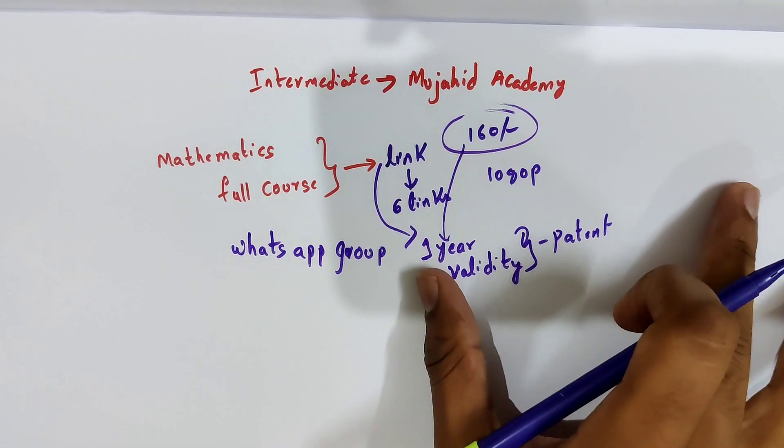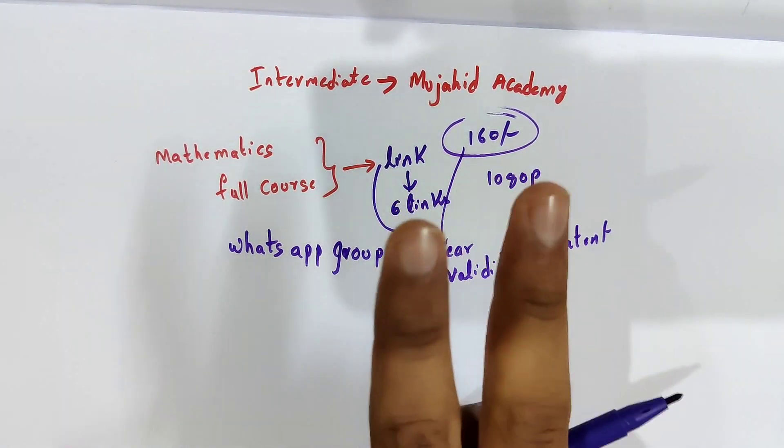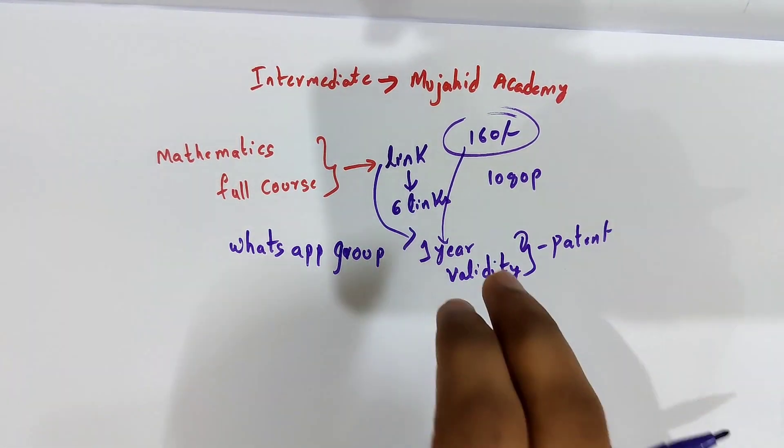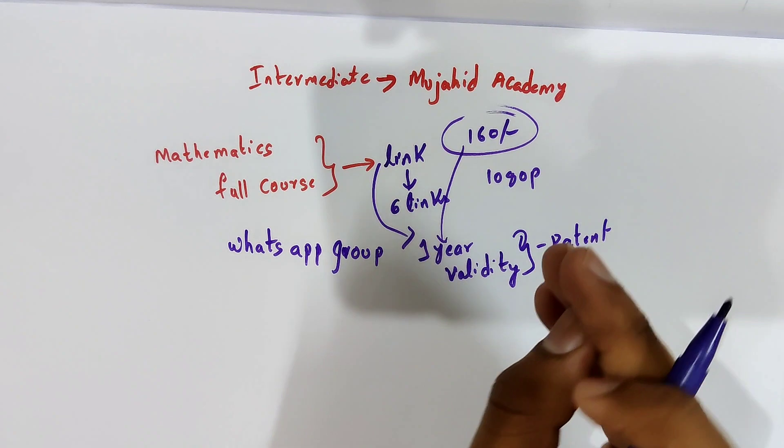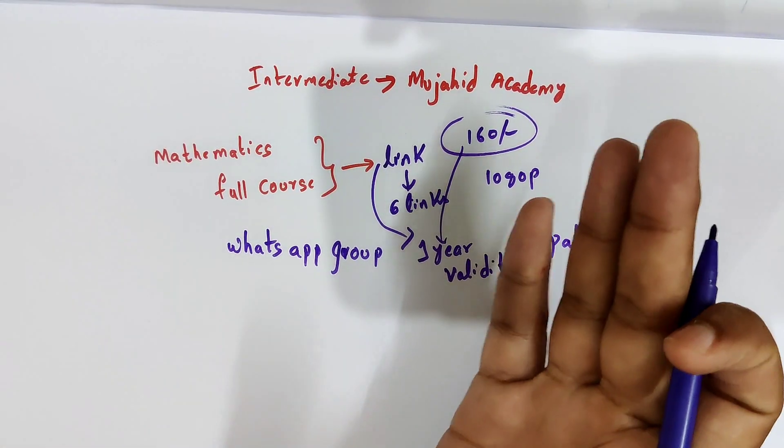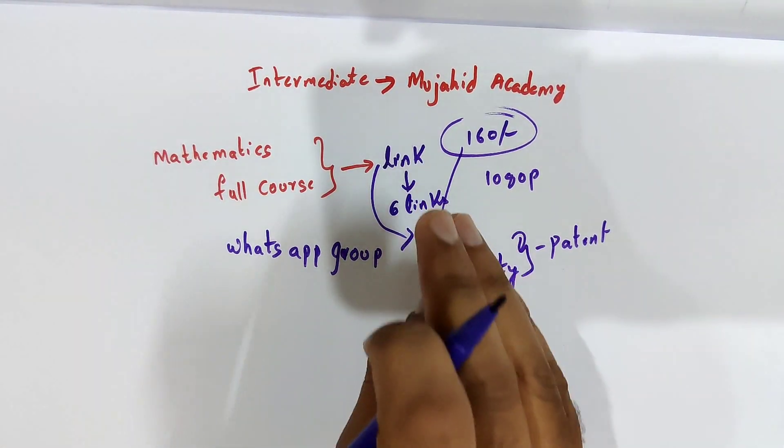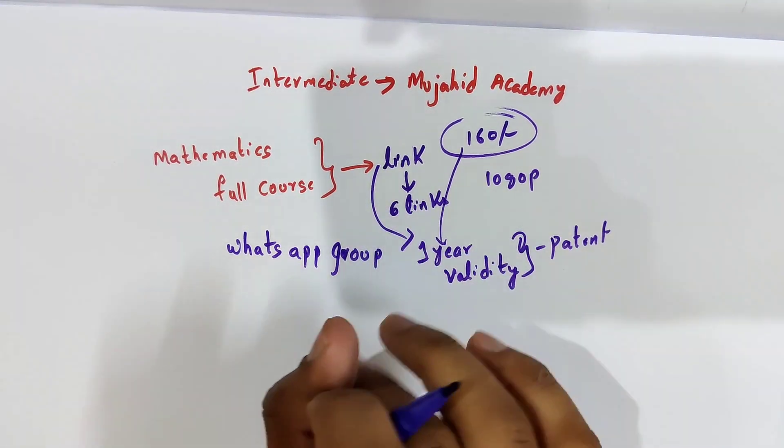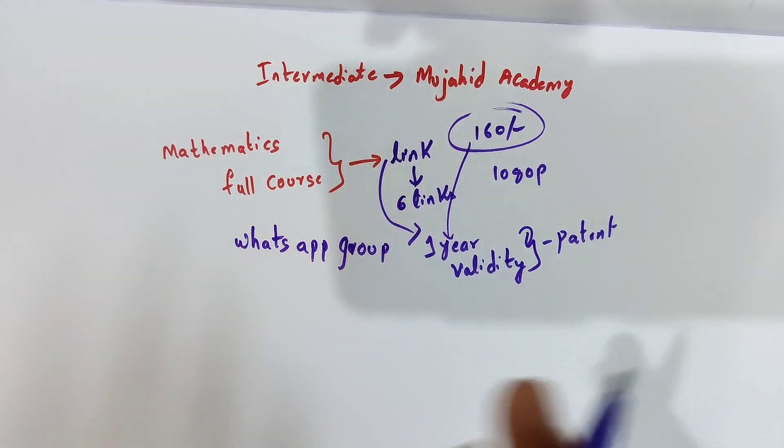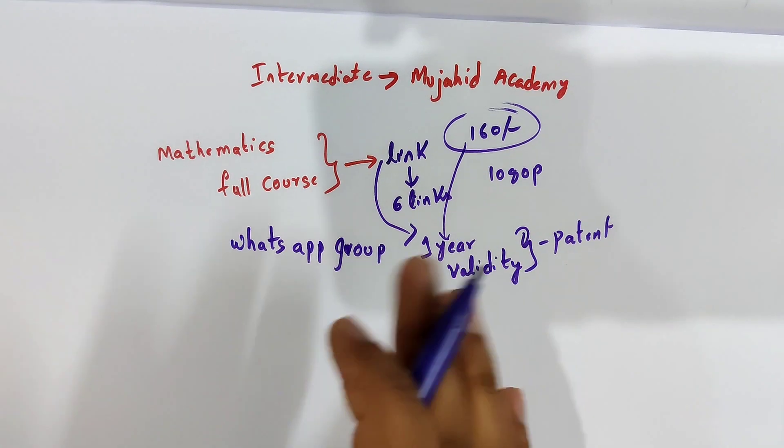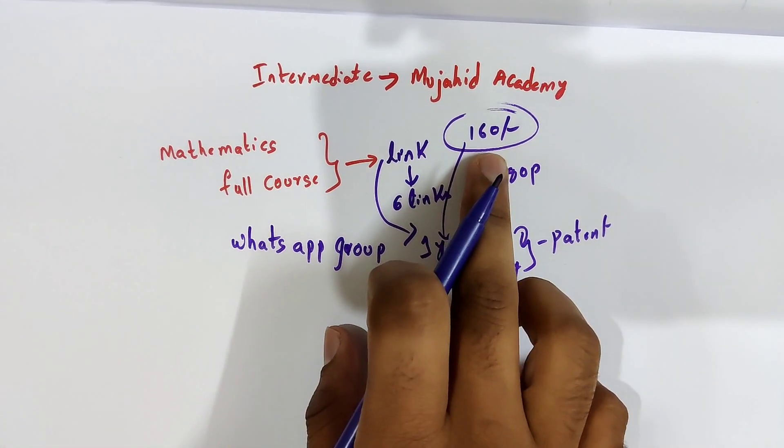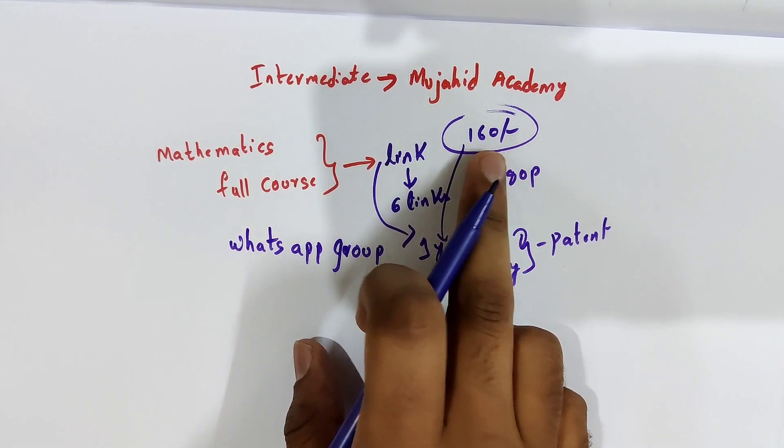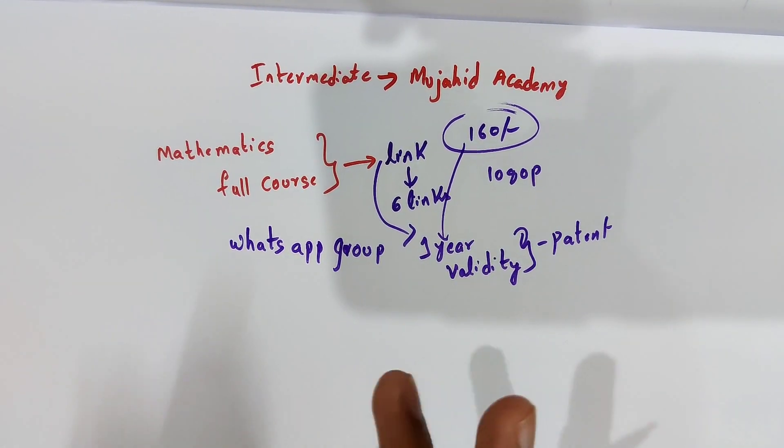I talked about coaching centers. If you compare, the 160 rupees is very very very less compared to any other coaching institutes. So the first subject at 160 rupees doesn't count at all for a full course of mathematics.